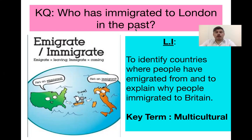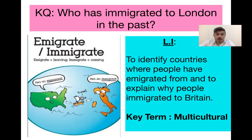Today you're going to focus a bit more on immigration, specifically on the city of London — the capital of the United Kingdom. The key question is: who has immigrated to London in the past? We're going to identify countries where people have emigrated from and explain why people immigrated to Britain — why did they leave their home countries and why did they choose Britain?